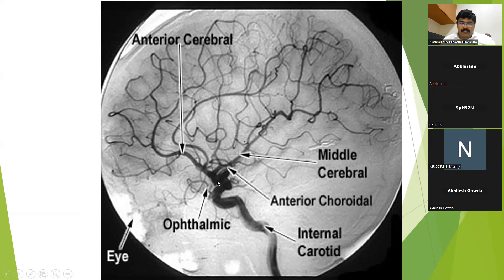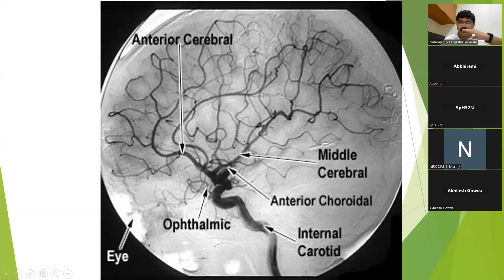The ICA terminates into the ACA and the MCA. Just distal to the PCOM lies the anterior choroidal artery. The anterior cerebral artery further divides into the callosomarginal and the pericallosal artery. The callosomarginal artery lies over the cingulate sulcus, just above the cingulate gyrus, and the pericallosal artery sits over the corpus callosum.